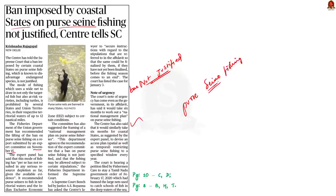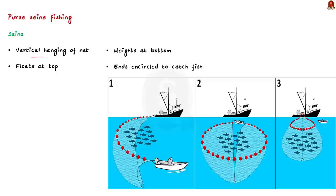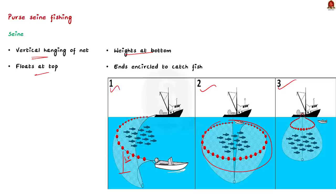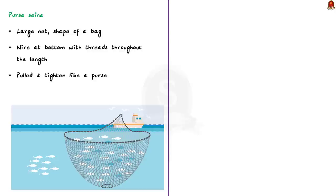A seine is a fishing net which hangs vertically in the water with floats at the top and weights at the bottom. The ends of the net are drawn together to encircle the fishes. The net hangs perpendicular to the ocean with floats at the top and weights at the bottom, and the ends are drawn together to catch the fish. A purse seine is a large seine which may be drawn into the shape of a bag. If a seine is large and drawn in the shape of a bag, it is called a purse seine.